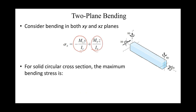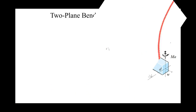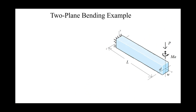For a circular cross-section, to find the maximum bending stress, we use a specific equation. The bending moment used is the vector sum of M_y and M_z, and d is the diameter of the shaft.